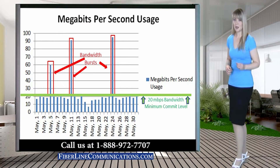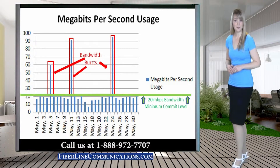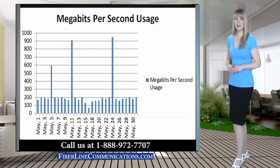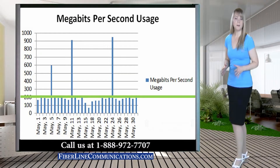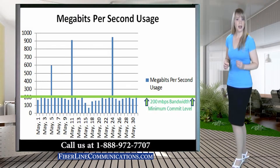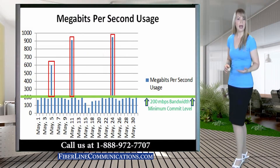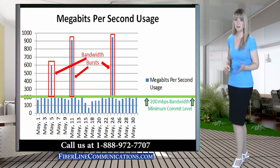A burstable Fast Ethernet circuit would allow a business to commit to as low as 10 Mbps each month, and be able to burst up to 100 Mbps as needed. Burstable Gigabit Ethernet requires a minimum commitment of 100 Mbps, but will allow a business to burst up to 1000 Mbps as needed.